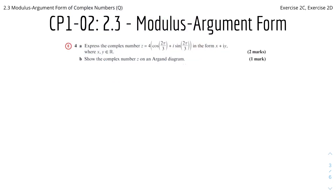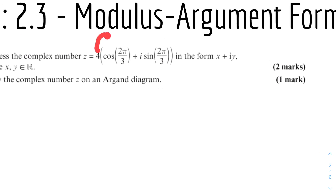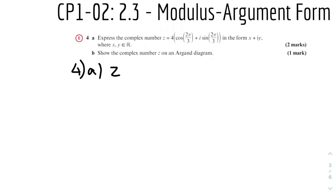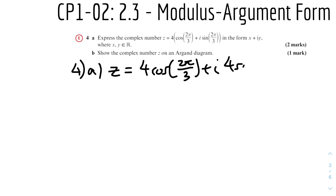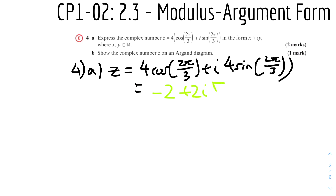Question 2: express the complex number z = 4(cos(2π/3) + i sin(2π/3)) in the form x + iy, where x and y are real numbers. We can expand the bracket by multiplying through by 4, so z = 4 cos(2π/3) + 4i sin(2π/3). Evaluating: 4 cos(2π/3) = −2, and 4 sin(2π/3) = 2√3. Therefore z = −2 + 2√3 i.